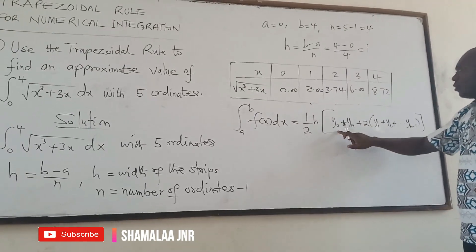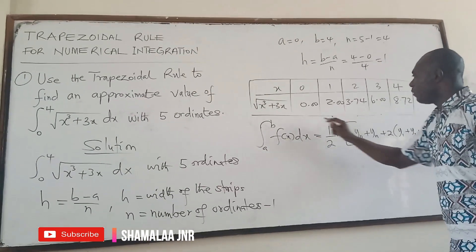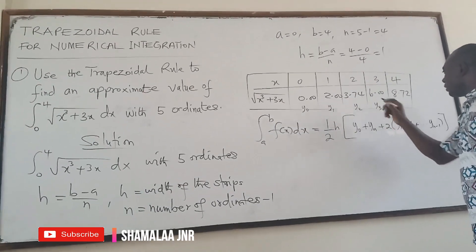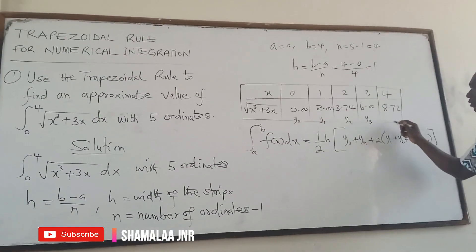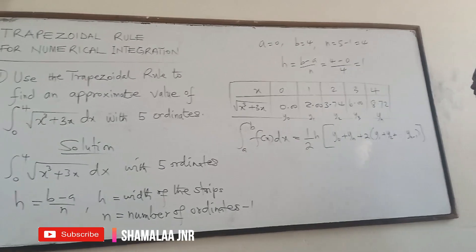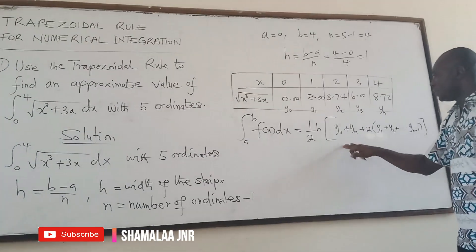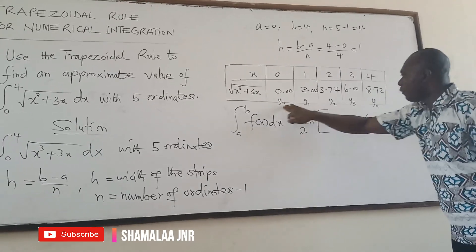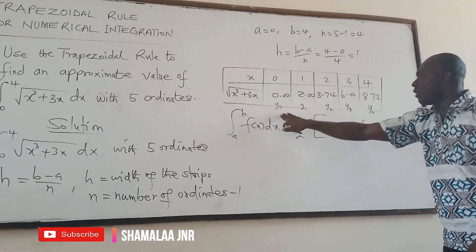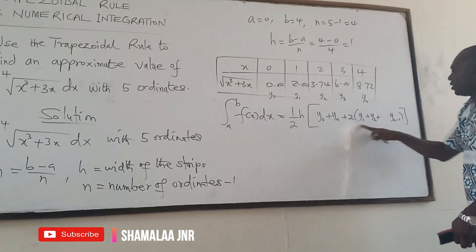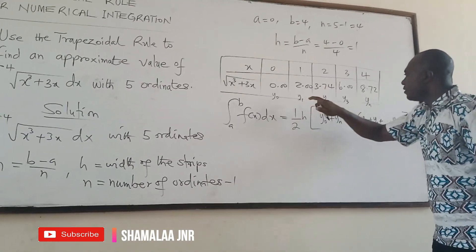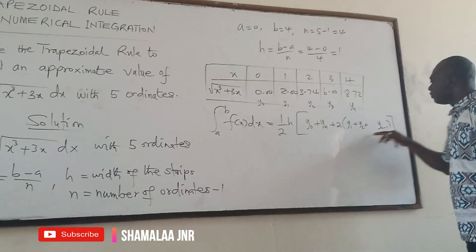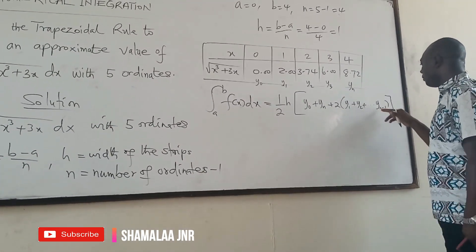Let me explain the formula. The h has already been calculated as the width of the strip. From the table, y0 is the first y-value, then y1, y2, y3, and the last one is yn. The formula says: half h times (first value plus last value), plus two times the sum of all the rest — which is why we go from y1 to y(n-1), meaning every value except the first and the last.